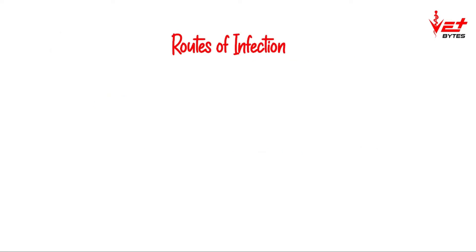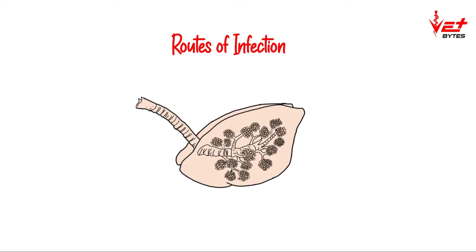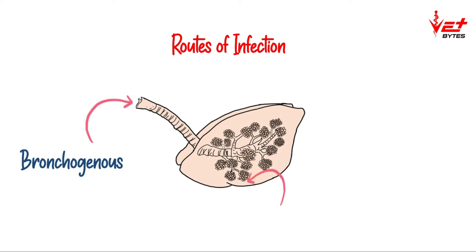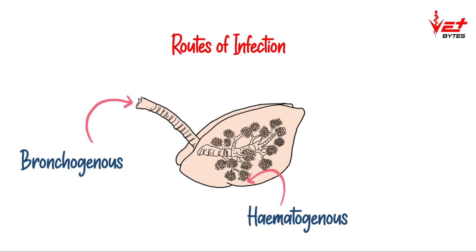There are three routes of infection. The first one is through the respiratory passage, called the bronchogenous route. The pneumonia caused by Streptococcus and Staphylococcus follows this route. The second one is through blood, called the hematogenous route of infection. Pneumonia caused by Pasteurella and Salmonella follows this route.